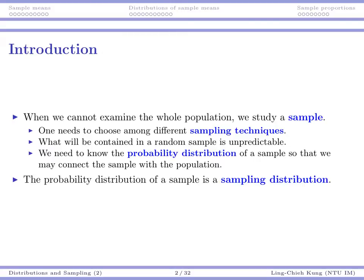So if you really need to use the sample to infer the population, you need to know the probability distribution of a sample, or the probability distribution of some statistics calculated from the sample. When you have your probability distribution of a sample, then you can really do a lot of things. So today, the topic is sampling distribution — which just means the probability distribution of a sample.